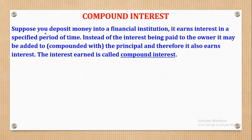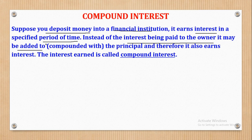Suppose you deposit money into a financial institution — it earns interest over a specified period of time. Instead of the interest being paid to the owner, it may be added to the principal. That word 'added to' can mean 'compounded to', and that's where the word compound interest comes from. It is compounded to the principal amount and therefore also earns interest — the interest earned is what we call compound interest.